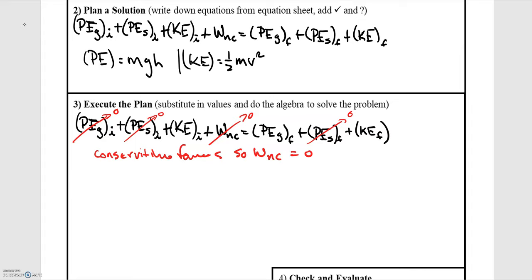The kinetic energy final, we know that at the top it's a turnaround point, so the velocity is zero. If the velocity is zero, that means it has zero kinetic energy. So that's going to be zero for the final kinetic energy.